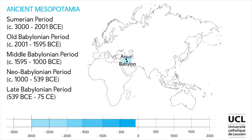Domain 4: Ancient Mesopotamia. The important historical periods include the Sumerian period, the Old Babylonian period, the Middle Babylonian period, the Neo-Babylonian period and the Late Babylonian period. The important sites include Assur and Babylon. Mesopotamia, the land between the rivers Tigris and Euphrates, corresponds to present-day Iraq and Syria. It was home to a great civilization known for its cuneiform writing and its ziggurats, towered temples, such as the famous Tower of Babel which is mentioned in the Bible.